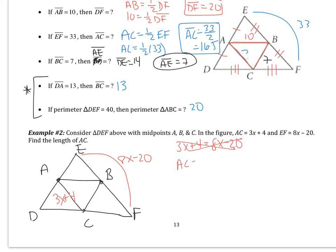You need to think about this. I've told you the midsegment AC is half of the base. It's half of EF. So this is your setup. 3X plus 4 is 1 half of 8X minus 20. Now a lot of us don't like dealing with that 1 half, so right away I'm going to multiply both sides by 2. The 1 half and the 2 cancel, so I'm left with 8X minus 20.